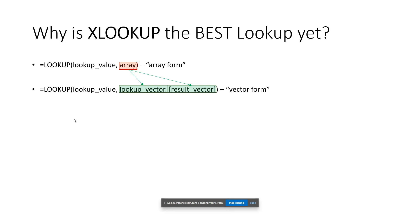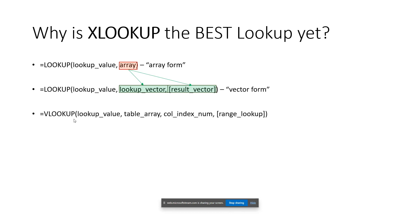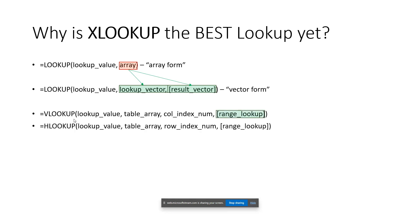What we need is the ability to get an exact match, and for that we need VLOOKUP. The primary improvement of VLOOKUP — and its sister HLOOKUP — over LOOKUP was the ability to designate an exact match or an approximate match.